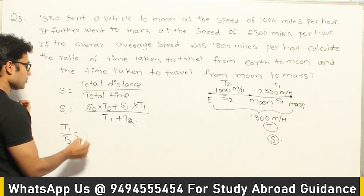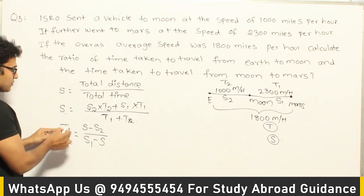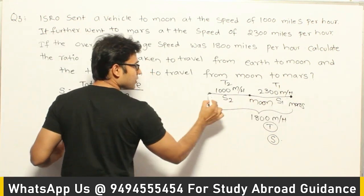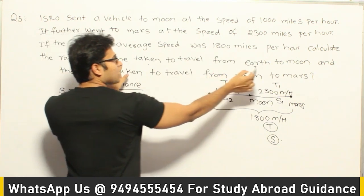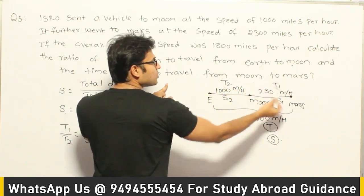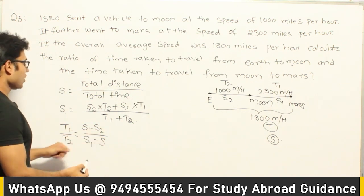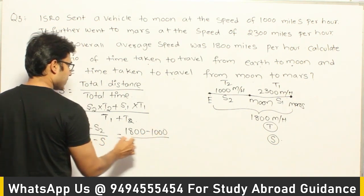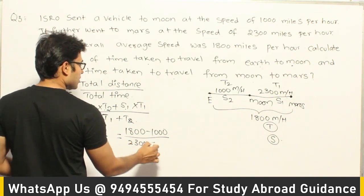The formula gives T1/T2 = (S − S2) / (S1 − S). T1 is the time from Moon to Mars and T2 is the time from Earth to Moon. The average speed S is 1800, so: (1800 − 1000) / (2300 − 1800) = 800 / 500.